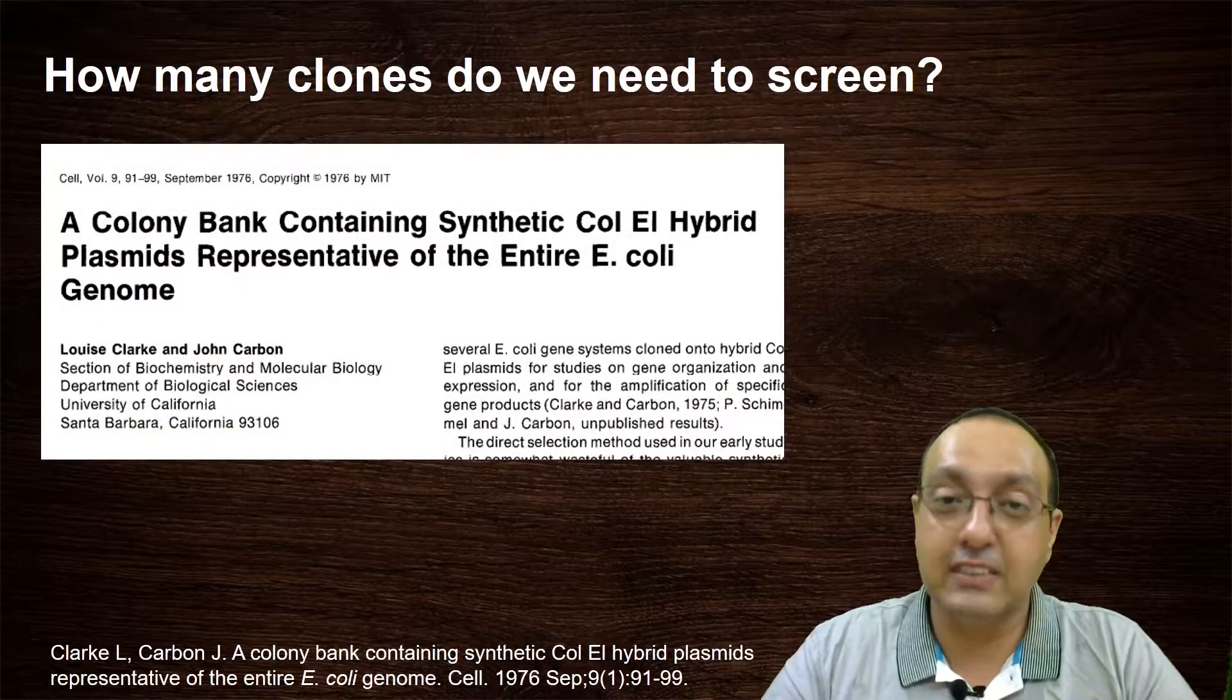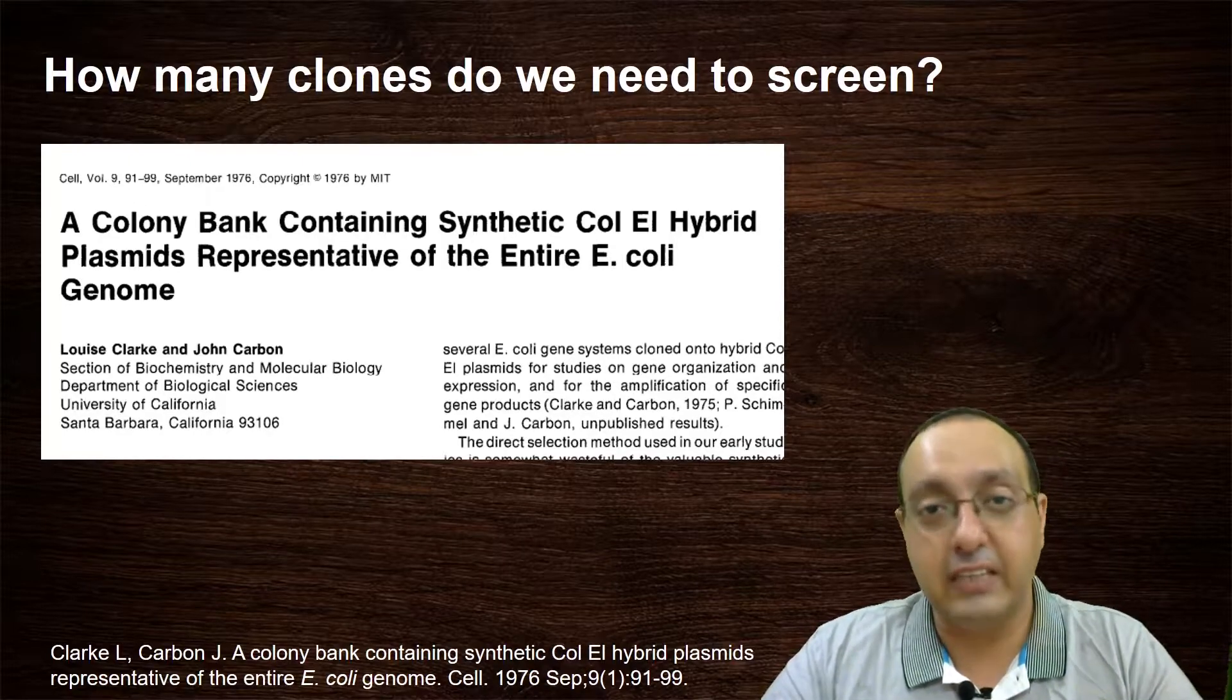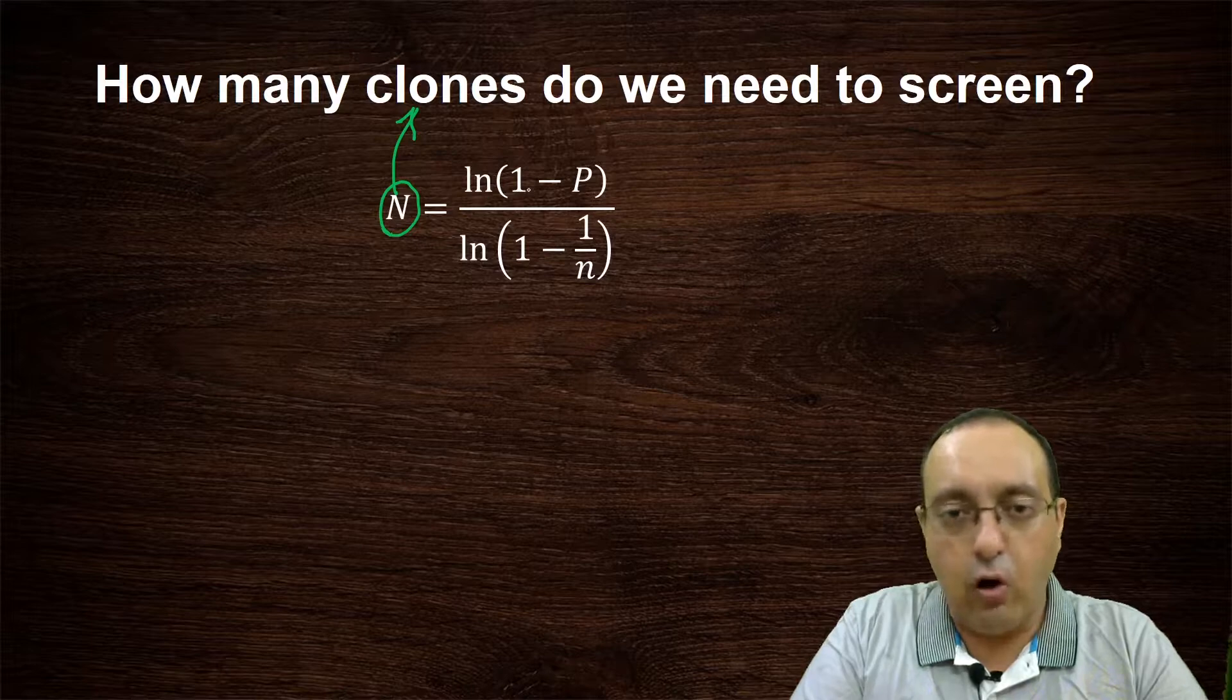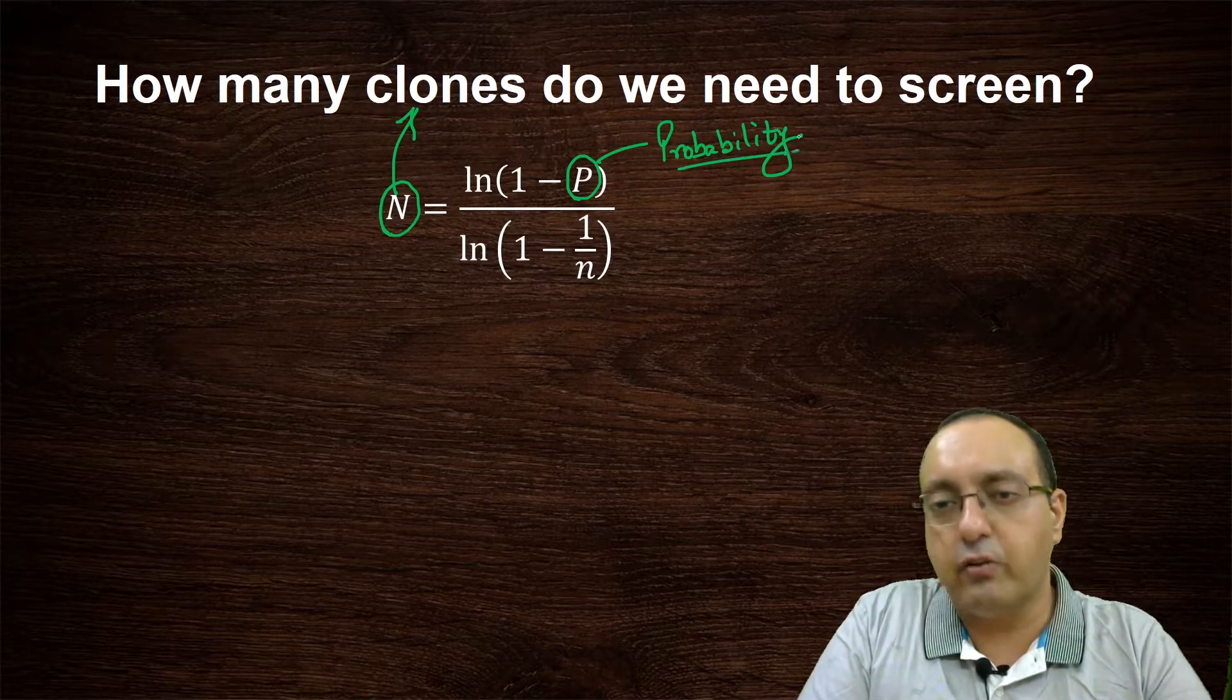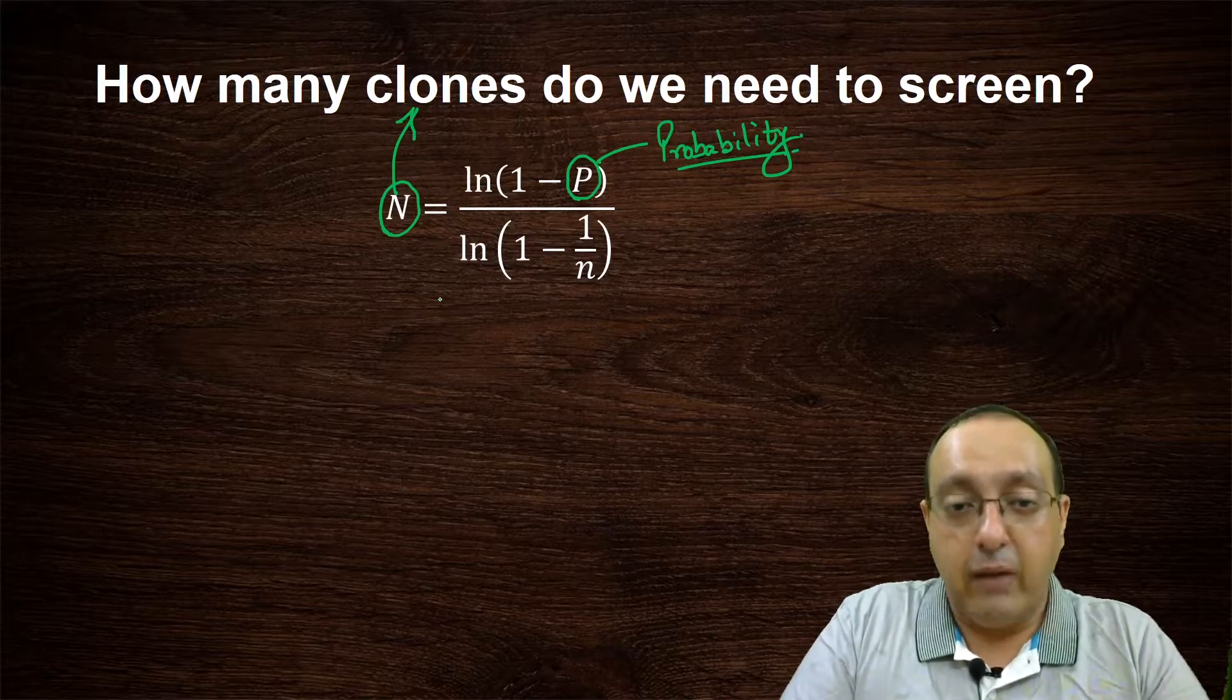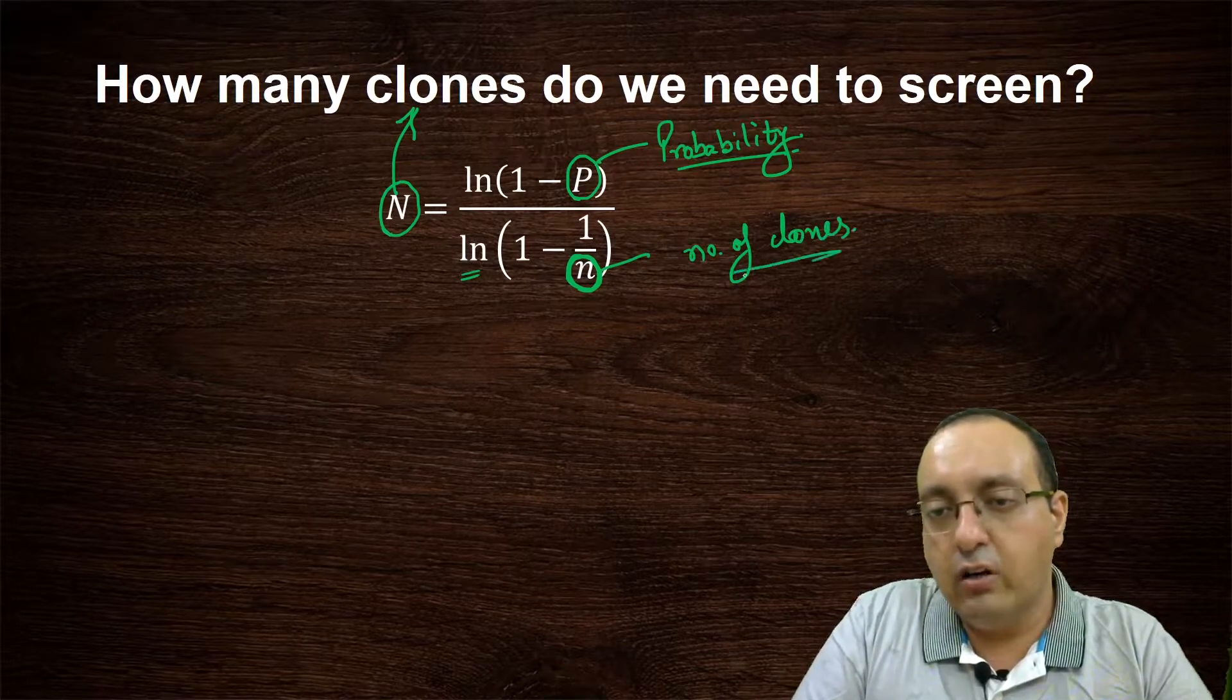How many clones do we need to screen? This is actually a very good mathematical question. And this gives us an idea of the scale of the problem. This problem was addressed by Lewis Clark and John Carbon back in 1976, where they looked at plasmid screening and they devised an equation. It looks like this. This is capital N, which stands for number of clones that you need to screen, equals natural log of one minus P. P stands for what is the probability that you want, that your gene of interest or your clone will be identified.